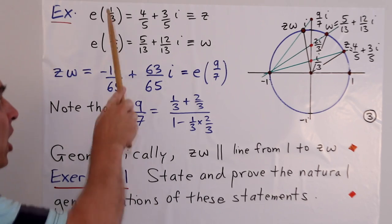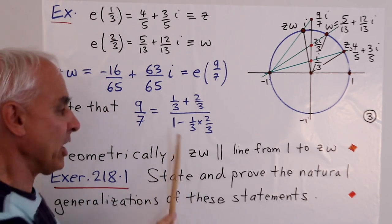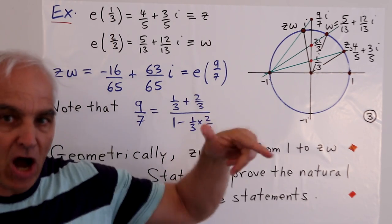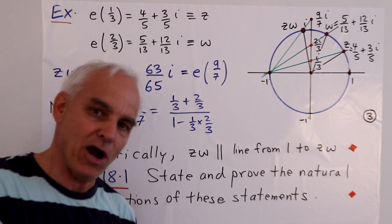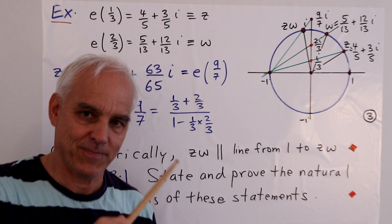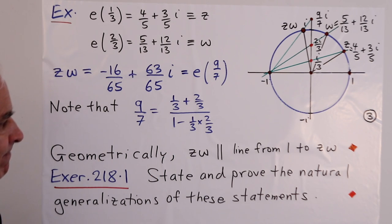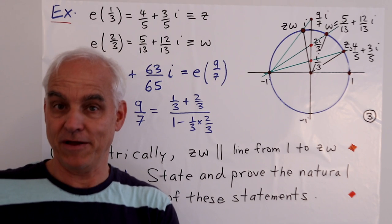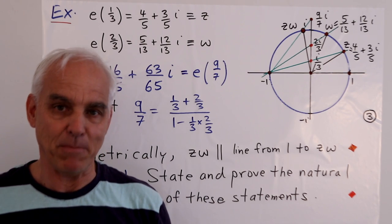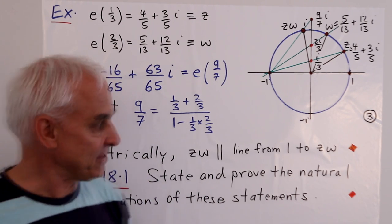9/7 happens to be the sum of these two parameter values divided by one minus the product of those two parameter values. If this was r and s, then the formula would be (r+s)/(1-rs). I'll leave this as an exercise for you to verify. You might like to have a look at some previous videos in this series for hints.